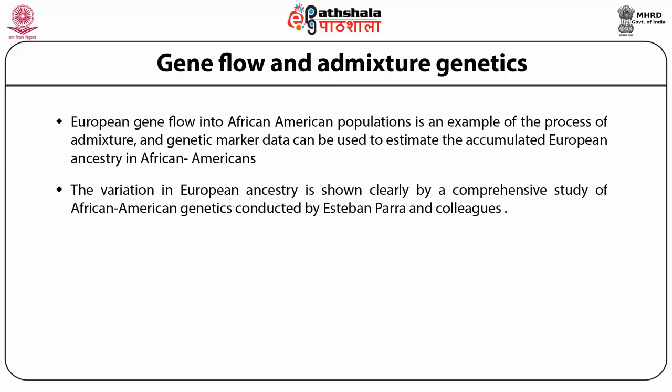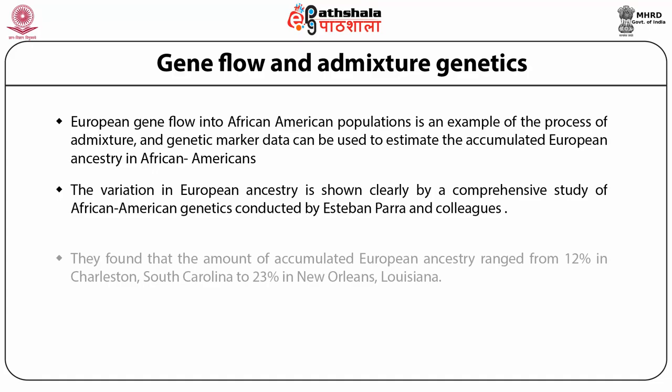Some studies have used the simple model of two parental populations — Europe and Africa — while some have looked at more complex models that take into account possible admixture from Native American sources. The earliest studies found that there is no single or simple answer to how much European ancestry exists in African Americans. The comprehensive study by Parra et al. examined genetic markers from nine loci exhibiting large differences between Europeans and Africans, estimating admixture proportions in 10 different African American populations in the United States. They found that accumulated European ancestry ranged from 12% to 23%, based on autosomal genetic markers.